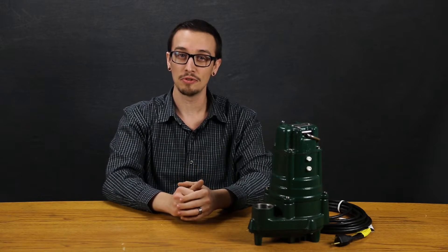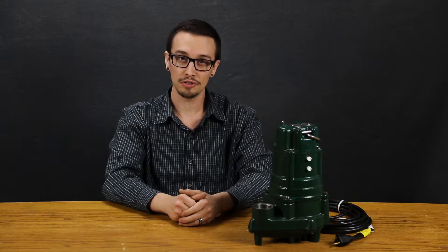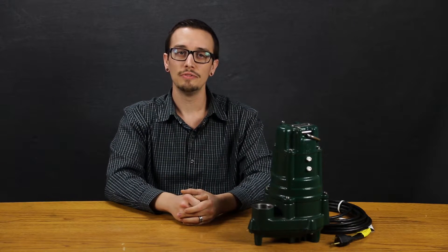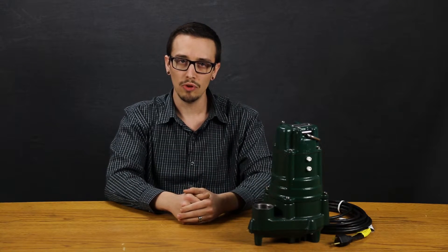As standard, this series offers cast-iron construction from top to bottom for maximum durability and heat dissipation of the motor during operation. The legs and underside of the volute on this pump are cast iron, making it ideal for repeated installation and removal for utility applications without the worry of damaging the underside of the pump.